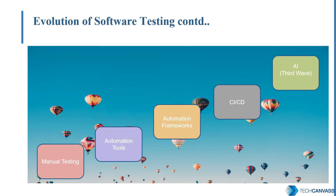The first step would be manual testing. The second step was the use of automation tools like Selenium, Katalon Studio, QTP, etc. Then we evolved our automation scripts by making use of complex frameworks like TestNG. With agile coming into the picture, continuous integration and delivery was introduced, so we integrated our software test suite with CI and CD tools. Now a new dimension has been added in software testing by artificial intelligence.